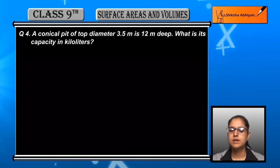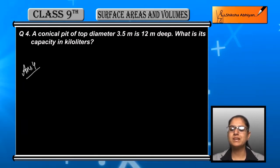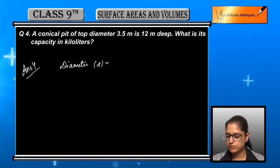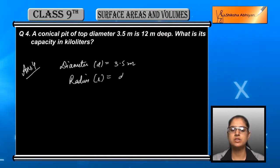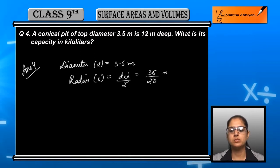First of all, the diameter d of the conical pit is equal to 3.5 meters. Now, the radius r of the pit is equal to the diameter divided by 2, which is 3.5 divided by 2, or we can say 35 by 20 meters.